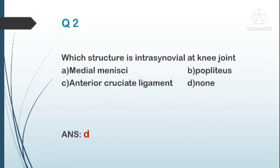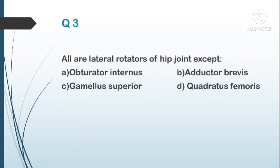Question number three: all are lateral rotators of the hip joint except — A) obturator internus, B) adductor brevis, C) gemellus superior, D) quadratus femoris. The answer is B, adductor brevis, because it produces adduction of the hip joint.